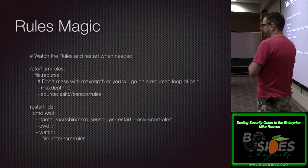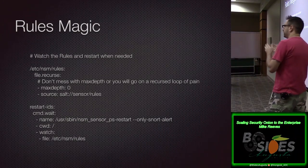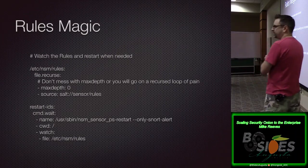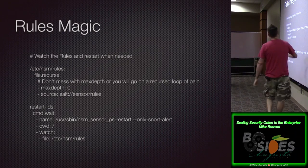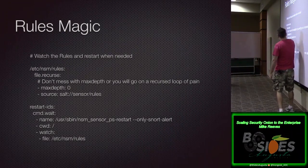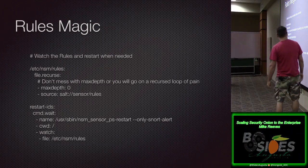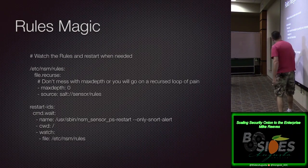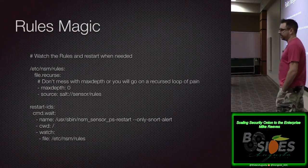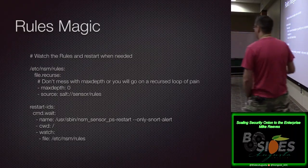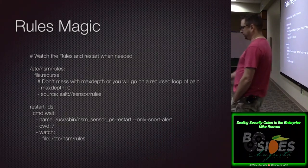For rule management, what file.recurse means in Salt is: everything in this directory, sync it. I'm saying take everything in the sensor rules directory on the master and put it in this directory on the sensor. Then I'm saying watch for any changes to this rules folder — if you see a change, run this command. So it watches the rule file directory, sees a change, and restarts Snort. You're good to go.